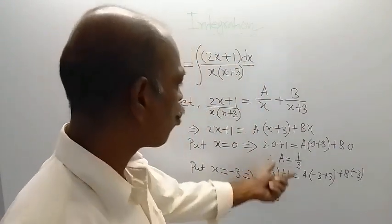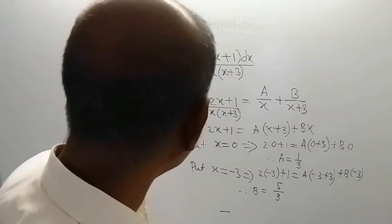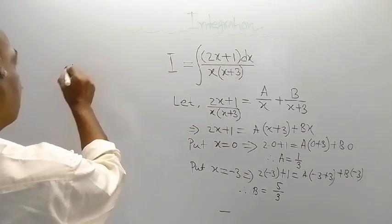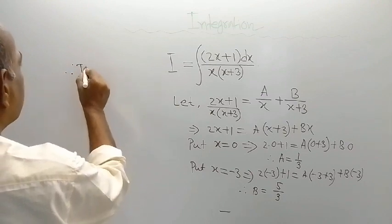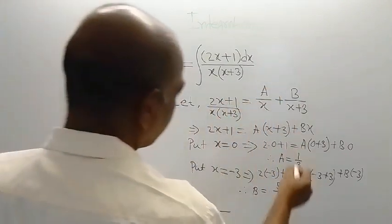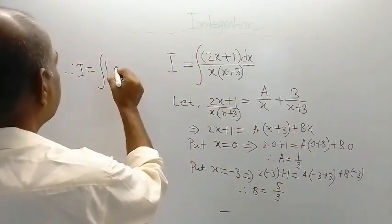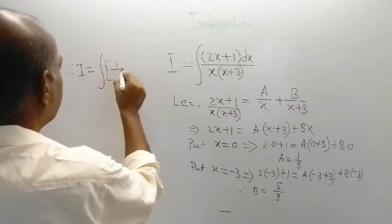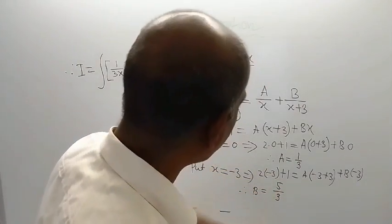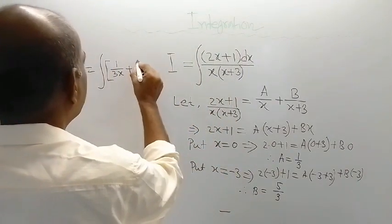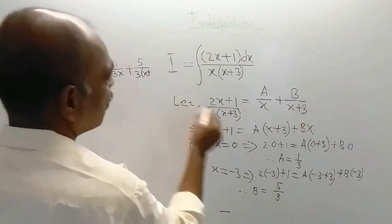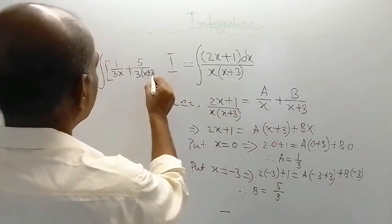Now we have got the values of A and B. Therefore, this integration, I is equal to what? A is 1 by 3, that means 1 by 3x. And B is 5 by 3. So here you will get 5 divided by 3 into x plus 3. This you are getting dx.